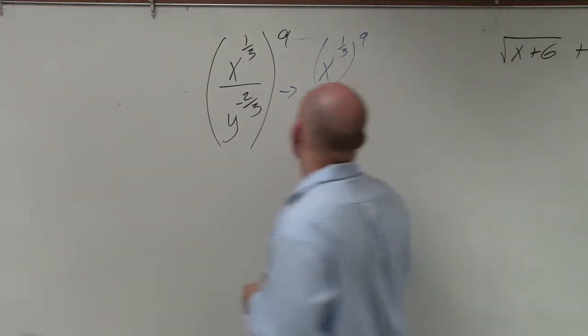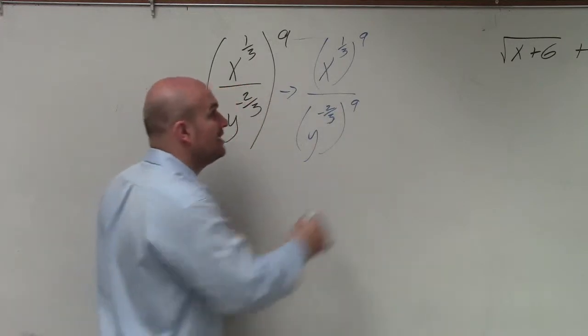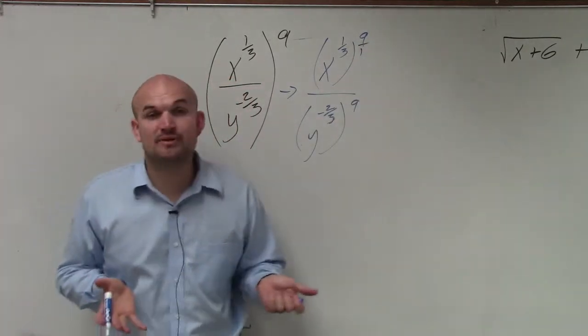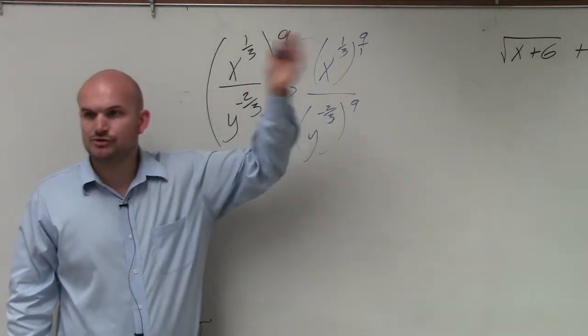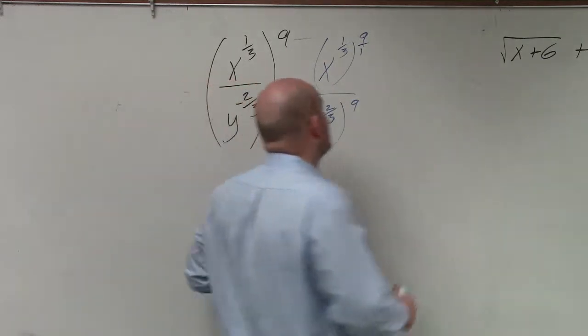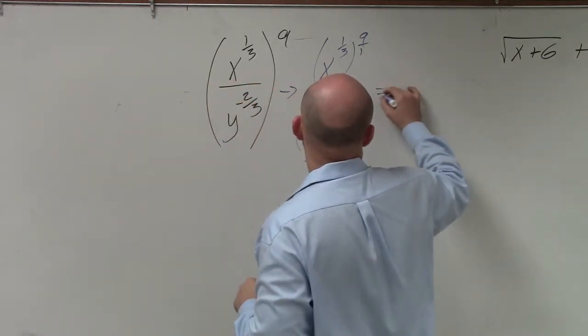So all I'm simply going to do is multiply 1/3 times 9. How do you multiply a fraction times a whole number? You rewrite your whole number as a fraction. You multiply numerator times numerator, denominator times denominator. 1 times 9 is 9, 3 times 1 is 3.